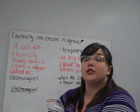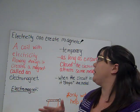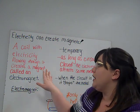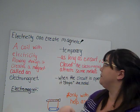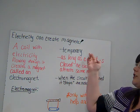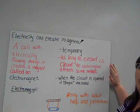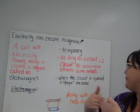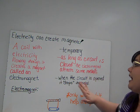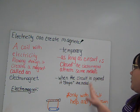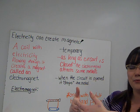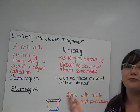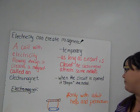We can also use electricity to create magnets because they have those qualities. If we take a coil with electricity flowing through it, it creates a magnet called an electromagnet. These magnets are temporary — they only work as long as the circuit is closed, completing the loop. The electromagnet will then attract some metals, but as soon as that electromagnet circuit is opened, it lets go of them and no longer attracts them.